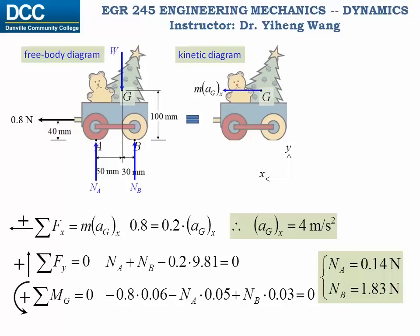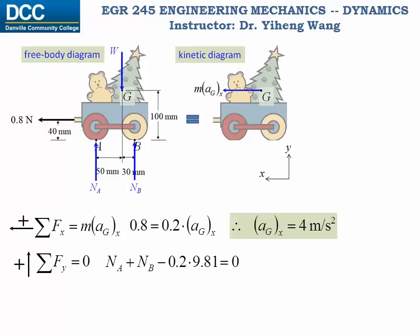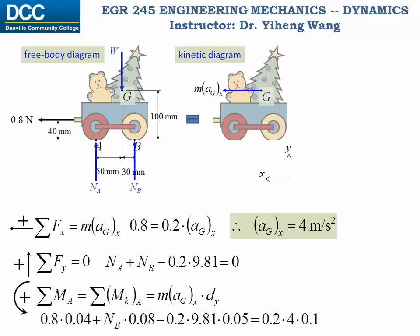Let's also try an alternative approach. The first two equations remain the same, but for the third equation, instead of taking the moment about G, we summarize the moment about point A, which equals the kinetic moment about A — calculated as the moment caused by the inertia force m·a_Gx. The advantage is that the moment about point A does not include the unknown force N_A, since N_A's line of action passes through A. Therefore this equation has only one unknown, N_B, which we solve directly. Then substituting N_B into the second equation gives N_A — exactly the same results as before.